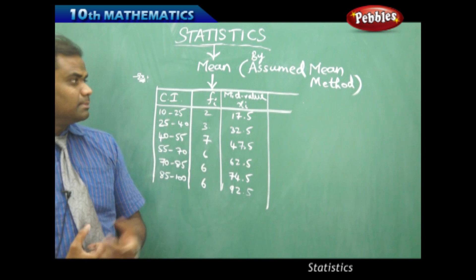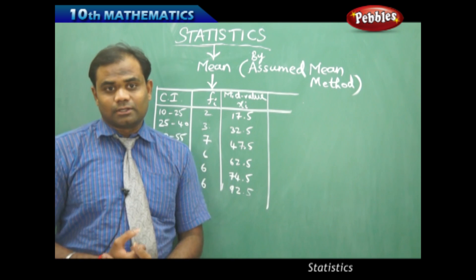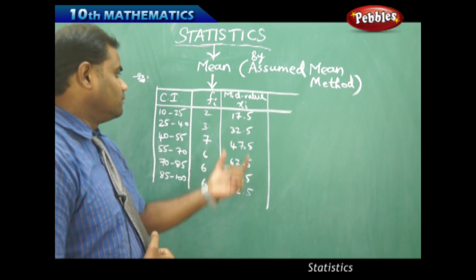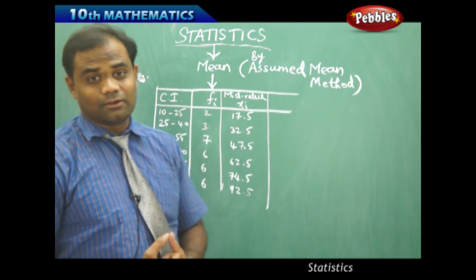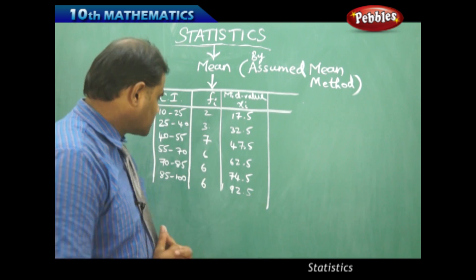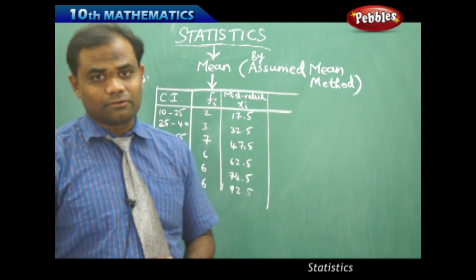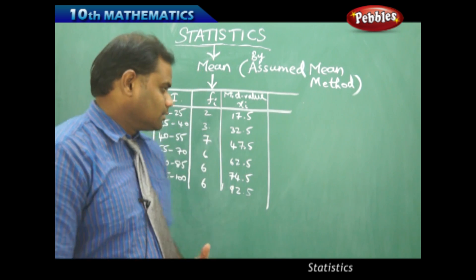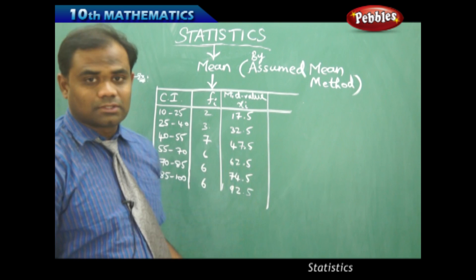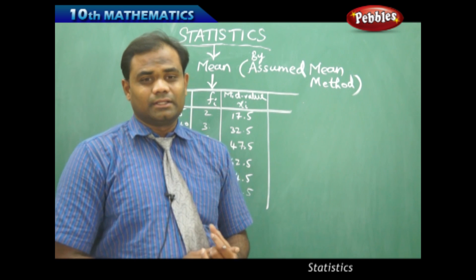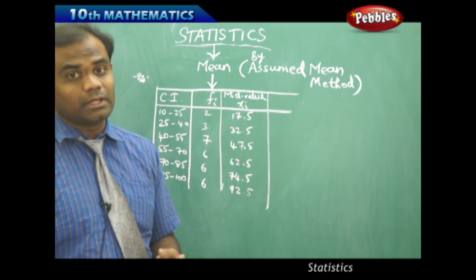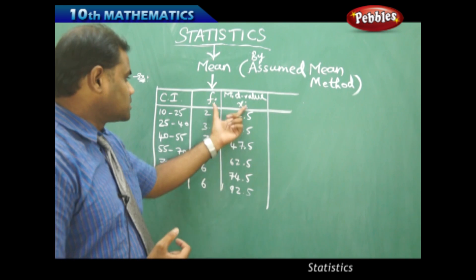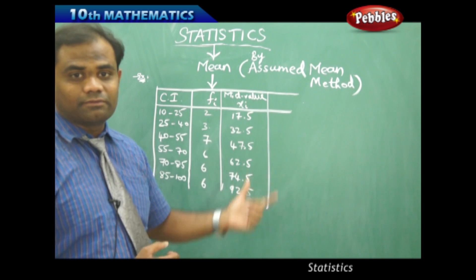This method — called the assumed mean method — is used when the values of xi and fi are very large. For instance, when the class interval contains very large numbers like 1000 to 2000 or 2000 to 3000, the mid-values become very large. In that case we use the assumed mean method because it reduces the magnitude of the values of fi and xi.